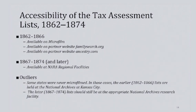There are a few exceptions. Some states such as Ohio, Wisconsin, and Massachusetts were never microfilmed. In those cases, the earlier lists — meaning 1862 to 1866 — are held at the National Archives at Kansas City. The later lists, 1867 and after, should still be at the corresponding regional facilities.